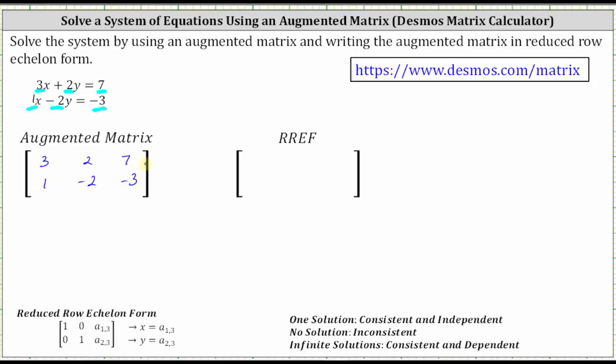And now we will use the Desmos matrix calculator to write the augmented matrix in reduced row echelon form, which is shown here below. Notice how we have a diagonal of ones here, and then above and below the ones we have zeros.